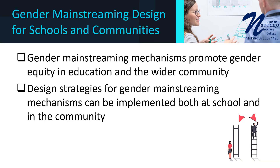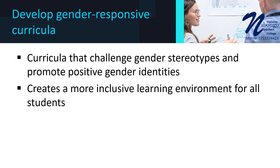Next let's examine gender mainstreaming design for schools and communities. Gender mainstreaming mechanisms are critical to promoting gender equity in education and the wider community. Here are some design strategies for gender mainstreaming mechanisms both at school and in the community. Number 1 — Develop Gender-Responsive Curricula: gender-responsive curricula can promote gender equity in education by addressing issues of gender bias and discrimination. Curricula that challenge gender stereotypes and promote positive gender identities can help to create a more inclusive learning environment for all students.